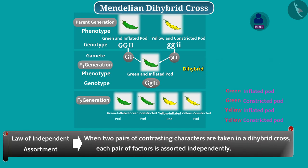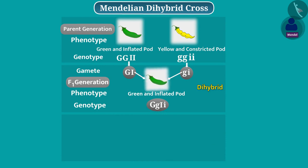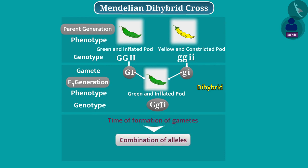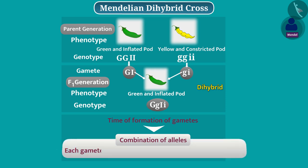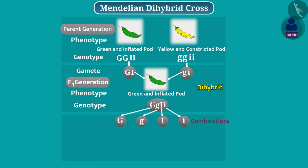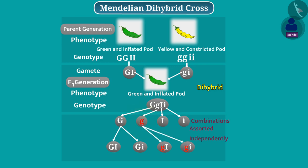Let's understand this in a better way. The genotype of the dihybrid plant is shown here. In this plant, at the time of formation of gametes, the combination of alleles will occur such that each gamete will receive only one allele for each character. Since alleles of two characters are present, these will be assorted independently, and the resulting gametes will be formed. The allele of green color of pod will be present in 50% of gametes, and similarly, the allele of yellow color of pod will also be present in 50% of gametes. Each of the alleles of inflated and constricted pods is also present in 50% of the gametes.